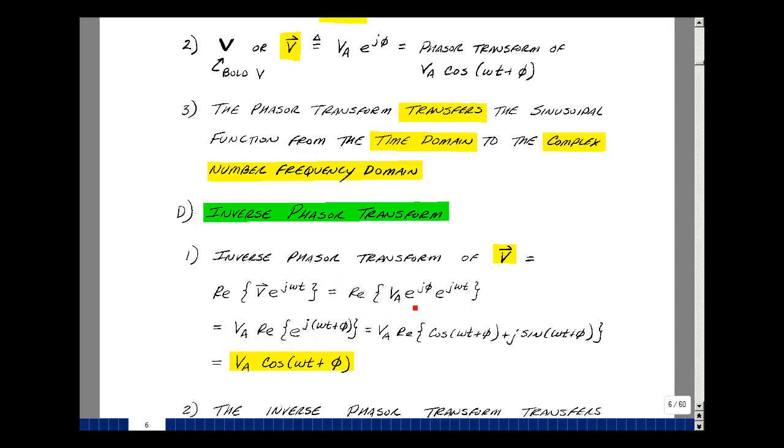I can combine these two together by multiplying these two exponentials and adding their powers. So I have e to the j quantity omega t plus phi. And then the real part of this would be the real part of the cosine plus j times the sine, which is just the cosine part. That's how we're going to come back into the time domain.